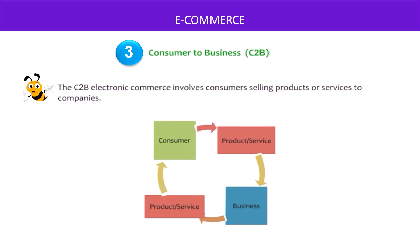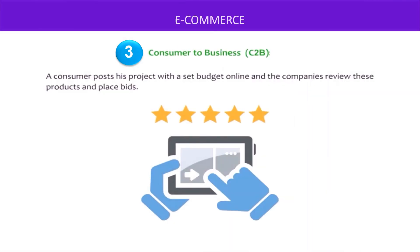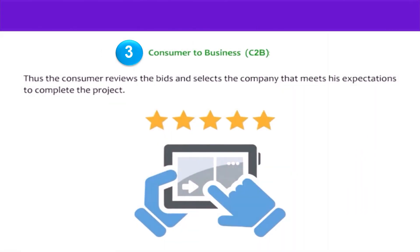The third mode is Customer to Business, or C2B. C2B electronic commerce involves customers selling products or services to companies. A customer posts his project with a set budget online, and companies review these projects and place their bids — that is, their offers. The consumer then reviews the offers and selects the company that meets his expectations to complete the project.